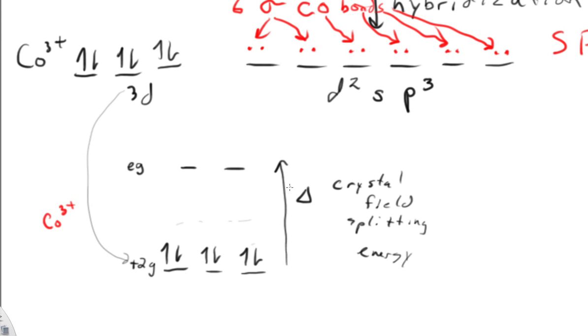We also need to label this as low spin. And one more thing to point out is that the valence bond and the crystal field, they match each other. The electron arrangement agrees.